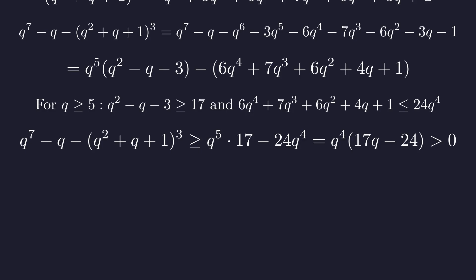Therefore, the difference is at least q to the 5th times 17 minus 24 times q to the 4th, which equals q to the 4th times the quantity 17q minus 24. For q greater than or equal to 5, this is strictly positive.